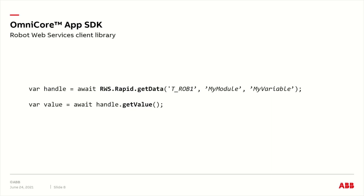Here is a simple JavaScript example where we first create a handle to the myVariable RAPID variable, located within the myModule RAPID module, on the T_ROB1 RAPID task. The client library will make sure that the variable exists on the controller — if not, an exception will be thrown. On the second line, the handle is used to get the current value of the variable. The handle can also be used for other purposes, such as updating the value on the controller, or setting up subscriptions.